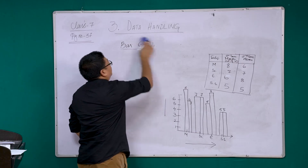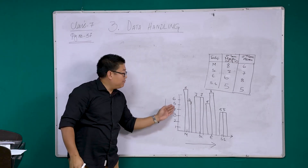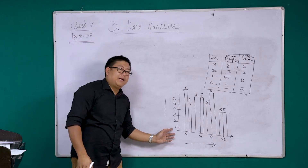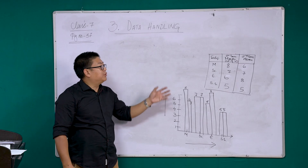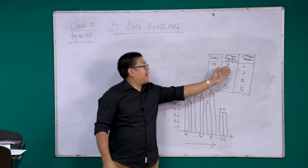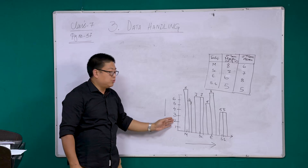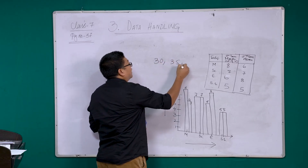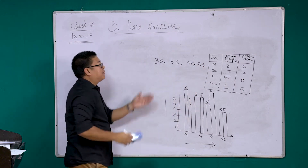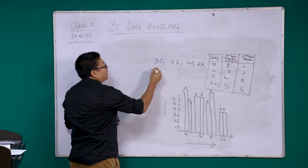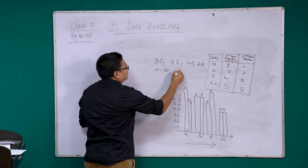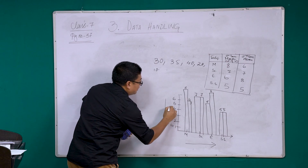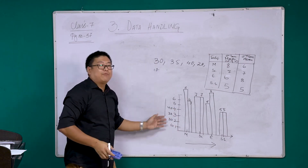One more thing — the scale. These numbers we use (1, 2, 3, 4...) are called scales and are estimated according to the data we have. Here we had single-digit numbers so we used 1, 2, 3, 4, 5. If your data contains values like 20, 30, 35, 40, you can mark the scale as 10, 20, 30, 40. You have to adjust the scale to suit the data.